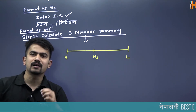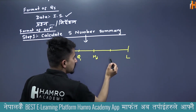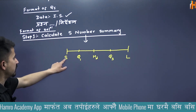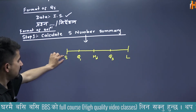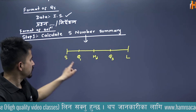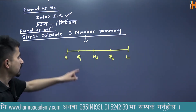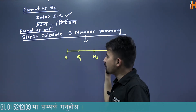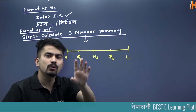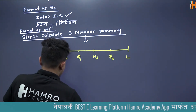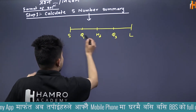5-वटा summary number के हुन्छन्? यो data हो भने — यता तिर smallest observation S छ, यता तिर largest observation L छ। अनि 5 वटामा median र smallest Q1 — quartile 1 — Q1 छ।